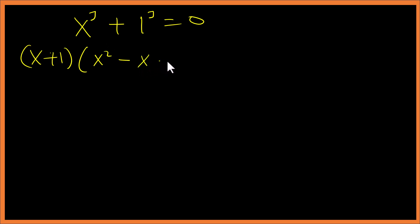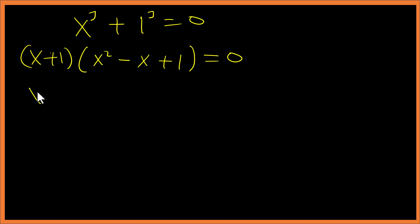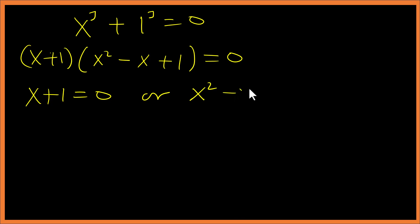So x cubed plus one equals zero. Applying the sum of cubes identity, this factors as x plus one times x squared minus x plus one equals zero. By the zero product property, either x plus one equals zero, or x squared minus x plus one equals zero.